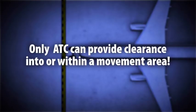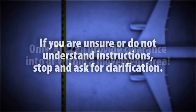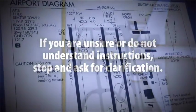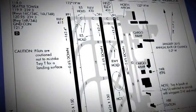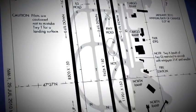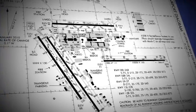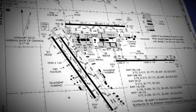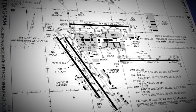No one except air traffic control can give you clearance into or within a movement area. If you are unsure or do not understand instructions, stop and ask for clarification. It's important for you to be familiar with the layout of your airport — study and review your particular airport's diagram and keep current on any updates and construction activity.